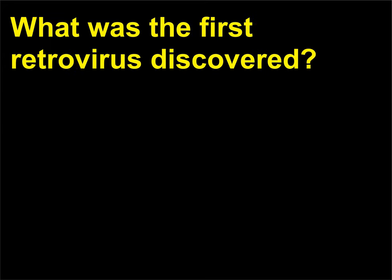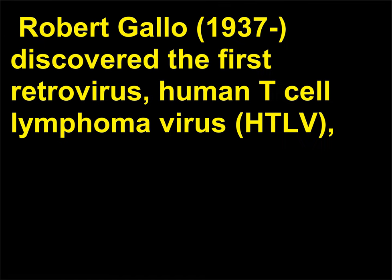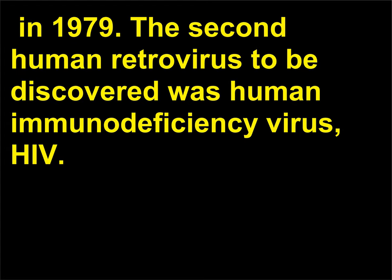What was the first retrovirus discovered? Dr. Robert Gallo, born 1937, discovered the first retrovirus, human T-cell lymphoma virus (HTLV), in 1979. The second human retrovirus to be discovered was human immunodeficiency virus, HIV.